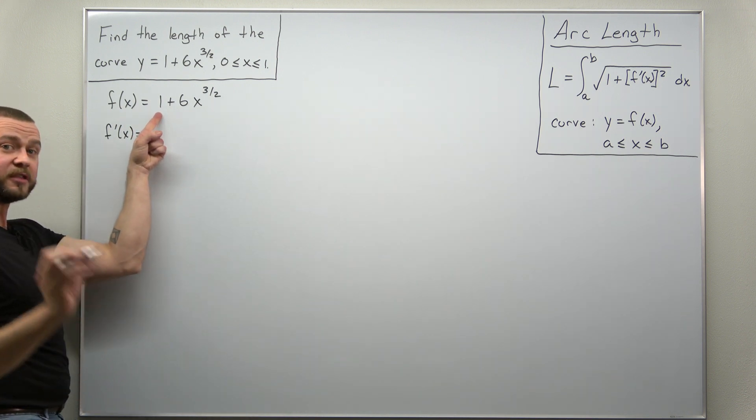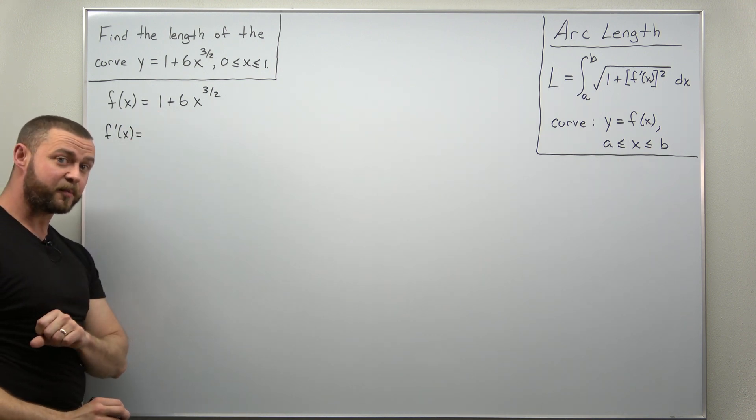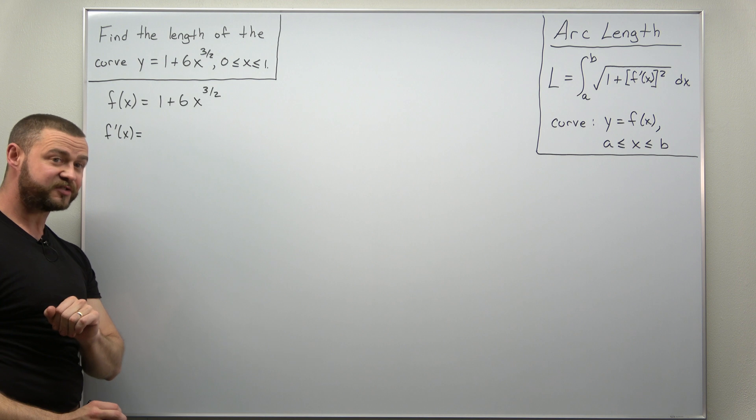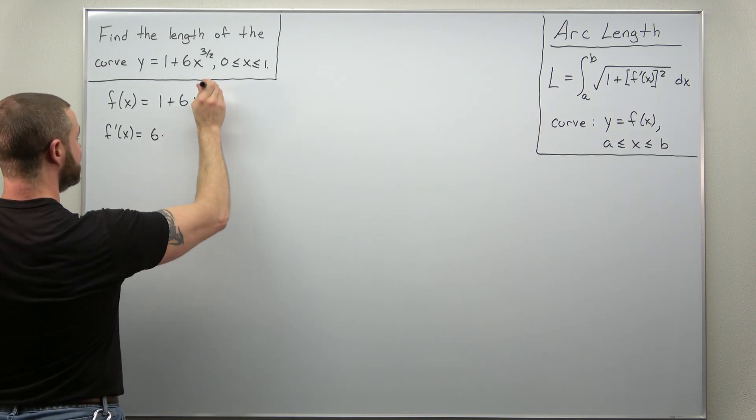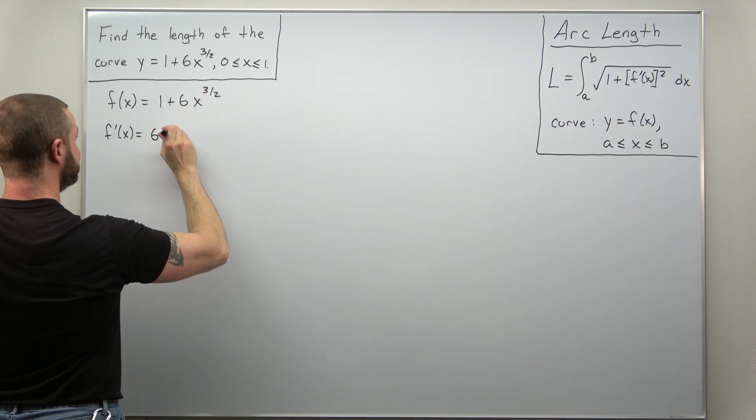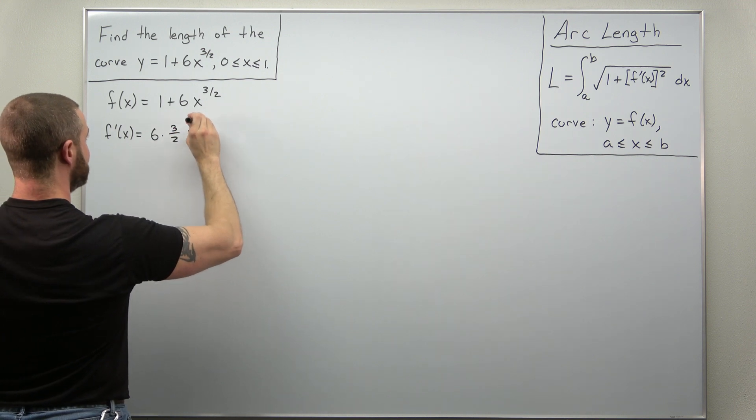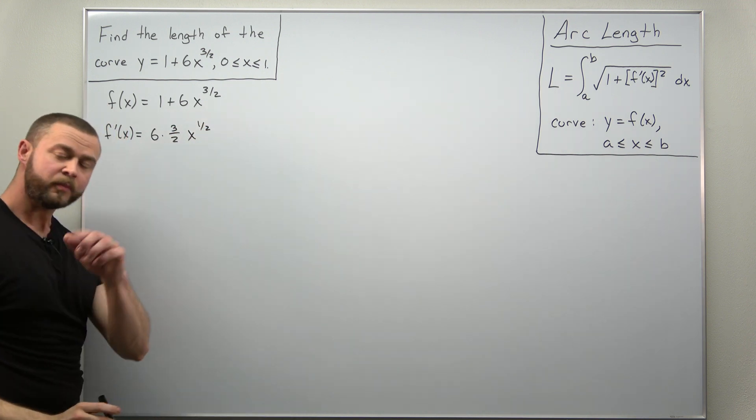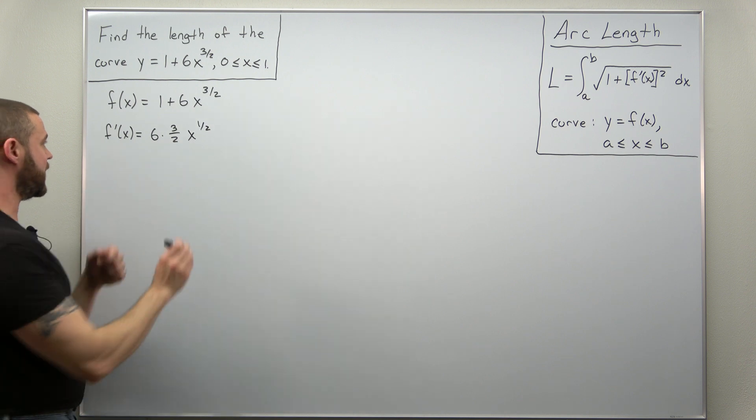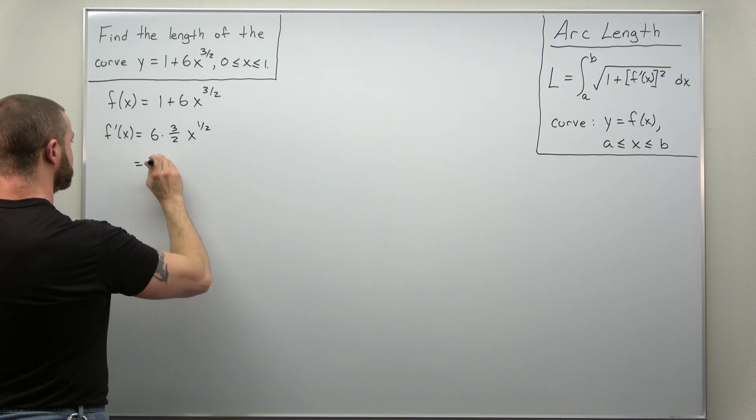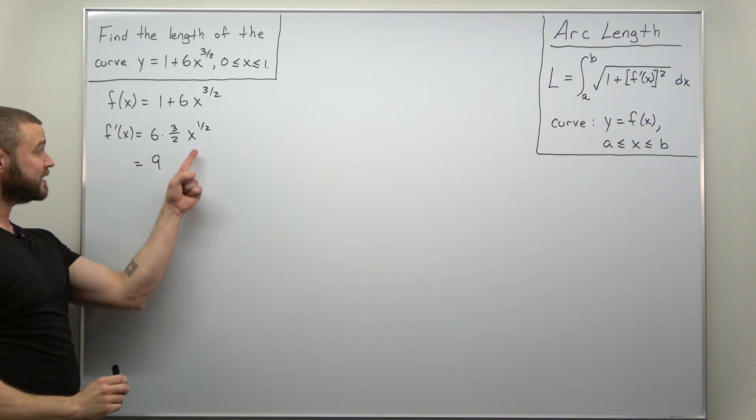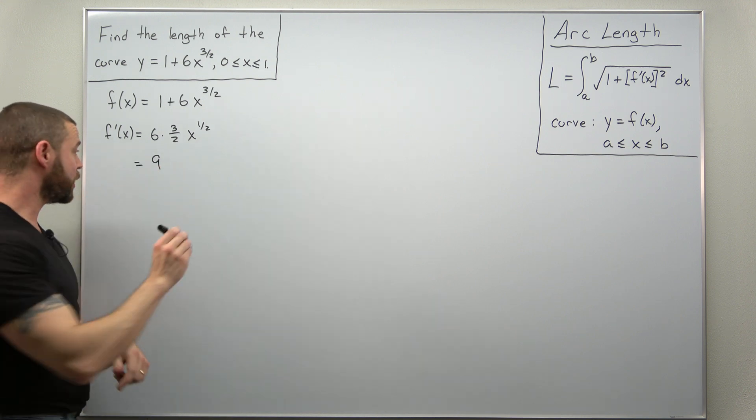Differentiate the first term 1. That's a constant. That differentiates to 0. Your factor of 6 stays there, apply the power rule, bring the power 3 halves down, and then subtract 1. You can simplify this to 9.